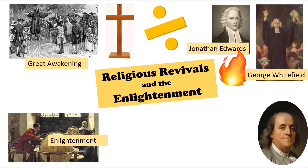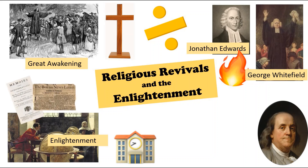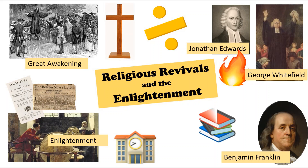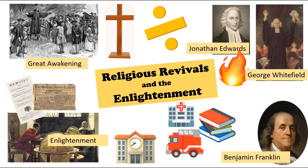The Enlightenment influences British America in a couple of key ways: it sees more colleges and schools, as well as information spread via newspapers, pamphlets, and subscription libraries. A key Enlightenment figure is Ben Franklin, who edits newspapers and writes Poor Richard's Almanac, as well as working as a philanthropist, contributing to society by introducing fire insurance, subscription libraries, and a city hospital in his hometown of Philadelphia.